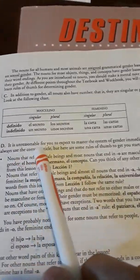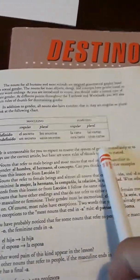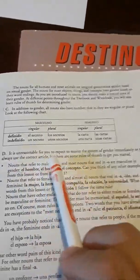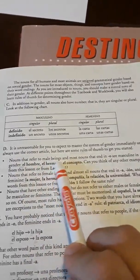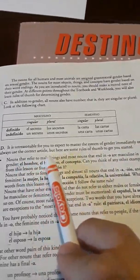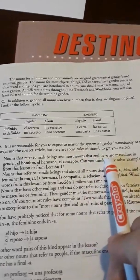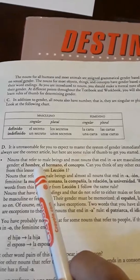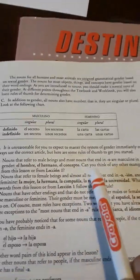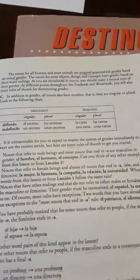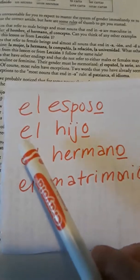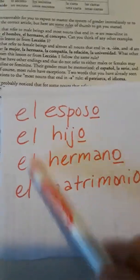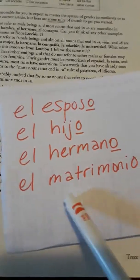It is unreasonable to expect to master the system of gender immediately, or to always use the correct article. But here are some rules of thumb to get you started. First: nouns that refer to male beings and most nouns that end in O are masculine in gender. For instance, el hombre, el hermano, el concepto, el esposo, el hijo — O at the end — el hermano, el matrimonio — ends in O.